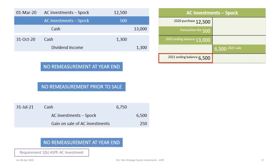At the end of the year, as with the previous year-end, there is no remeasurement under AC investments in 2021. The ending balance in our T-account is simply the $13,000 from the end of last year minus the $6,500 removed for the sale, resulting in a balance of $6,500. And that's all there is to it.